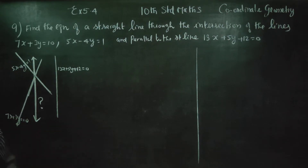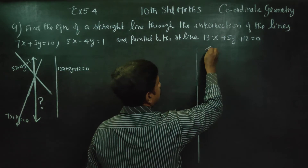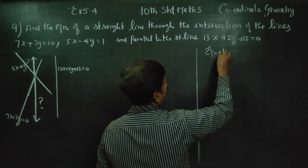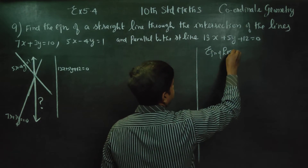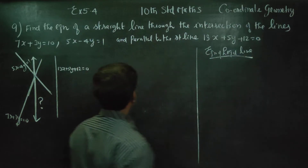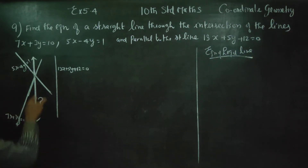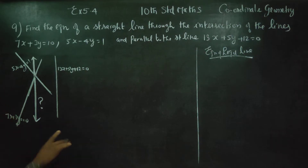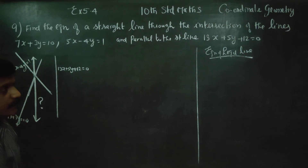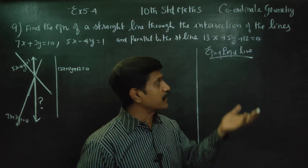These are the equations. The equation of the required line passes through the point of intersection of the two given lines.